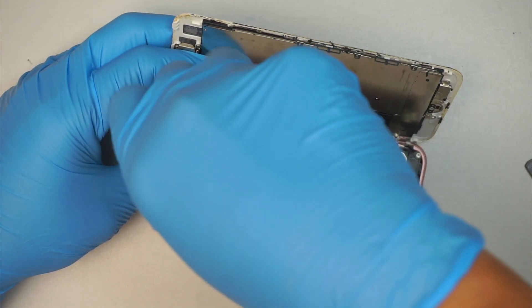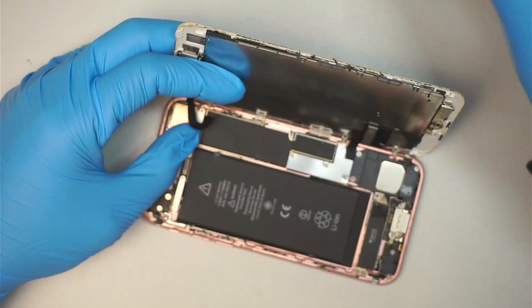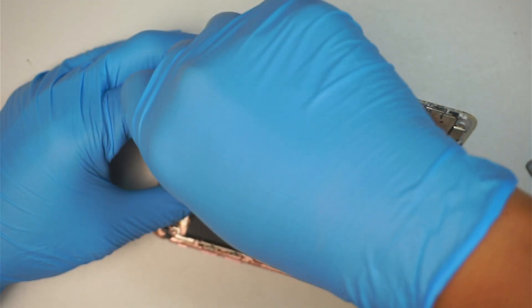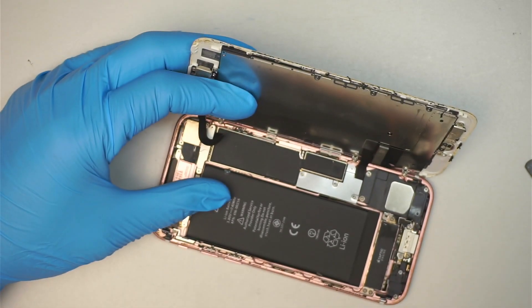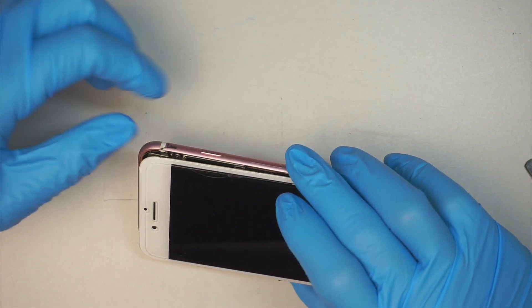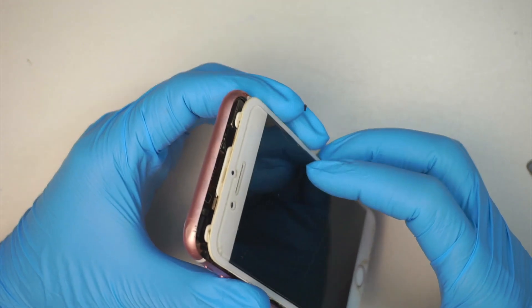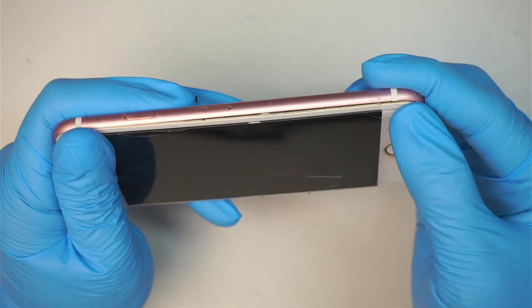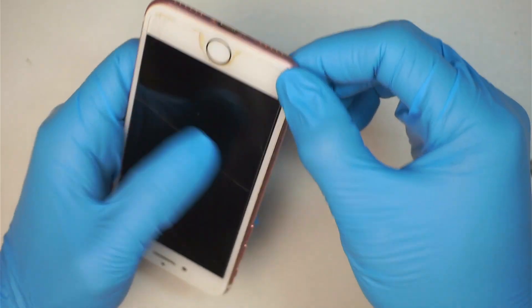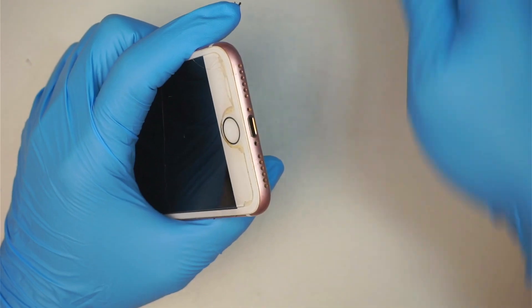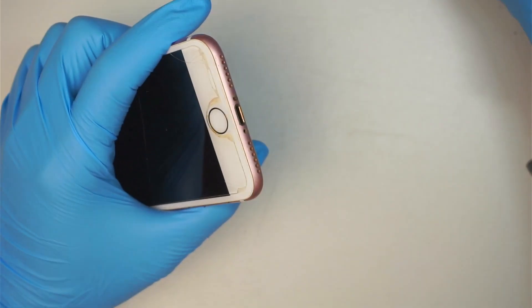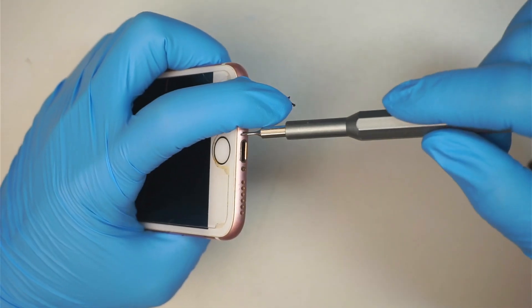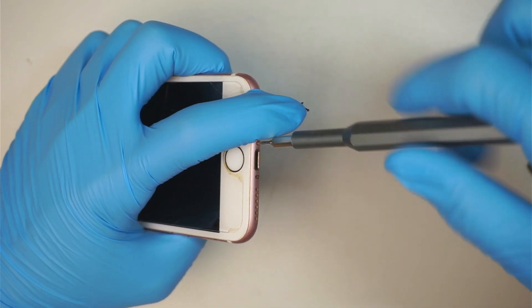And then to install, what you want to do is make sure you align the top, slide it in first, and then crunch it down on the side. Do not forget the two screws back in. Pentalobe P2 0.8, that's the size of the screw.